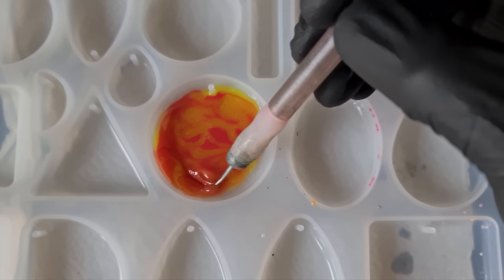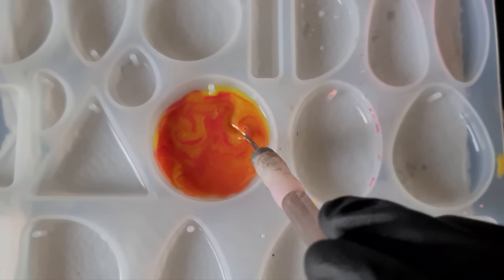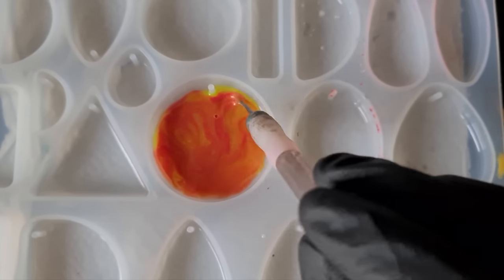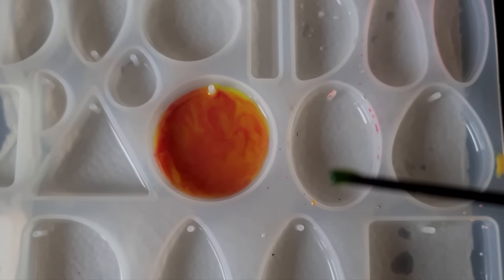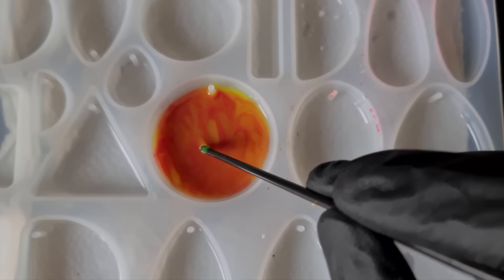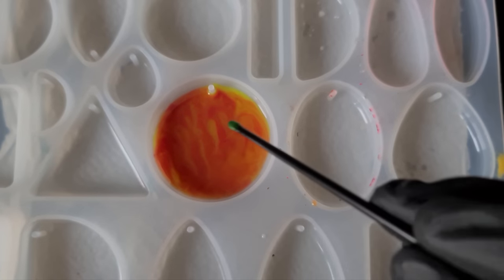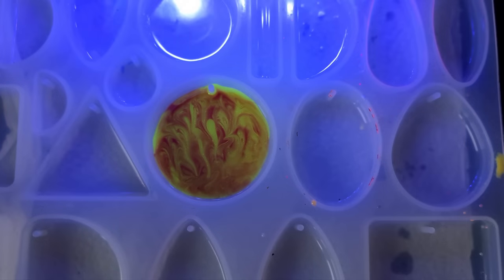Then you can just draw lines through, wiggly lines like so. If you want more yellow you can always add more yellow. Just draw it through and then we just give that a cure.